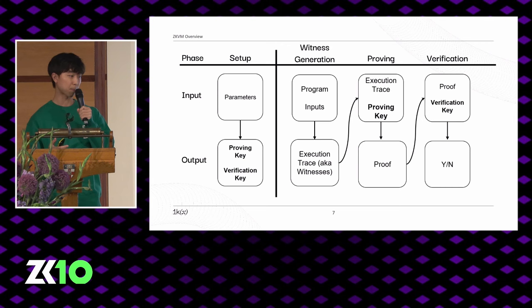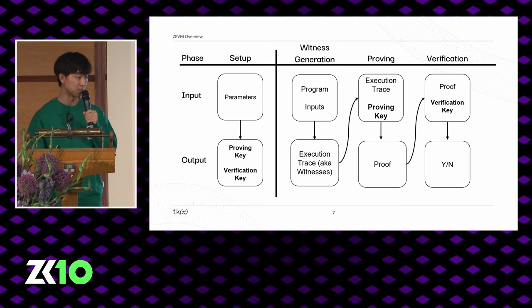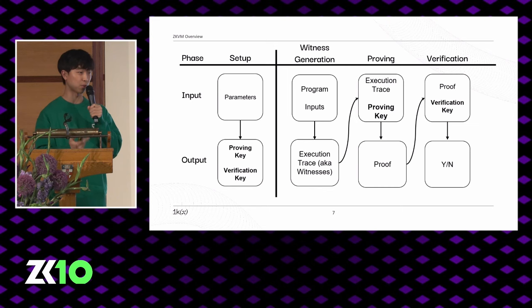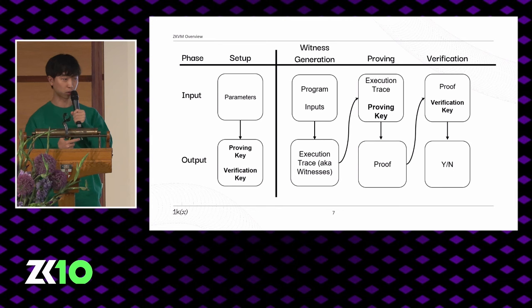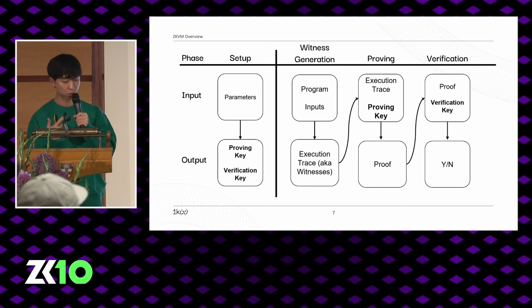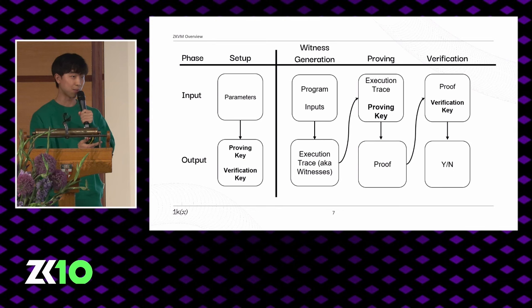The ZK part of the ZKVM proves valid execution of the machine given an initial program, initial inputs, and an initial machine state. You can divide this into four parts: setup — which includes parameters like max trace rows, fixed columns, hash functions, and creates a proving key and verification key; witness generation — where an executor takes the program and input and creates the execution trace matrix, also splitting the program into parts for parallel proving; proving — where the prover takes the execution trace and proving key to generate a proof; and finally verification.